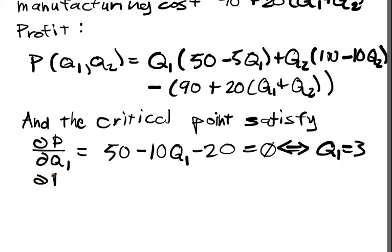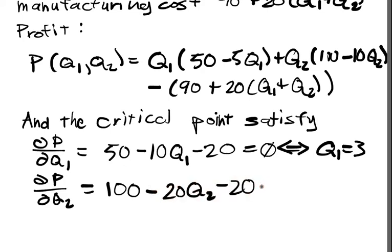Similarly, ∂P/∂Q2 is equal to 100 minus 20Q2 minus 20 is equal to 0. And that will happen if and only if Q2 is equal to 4.